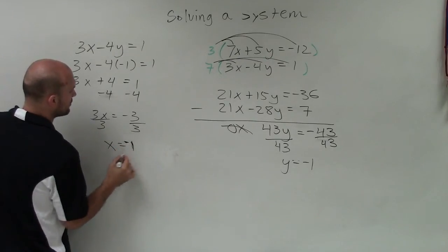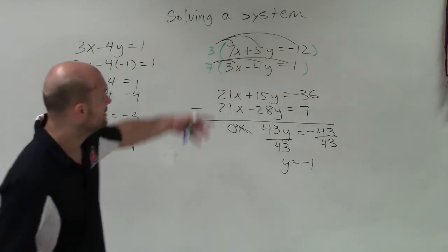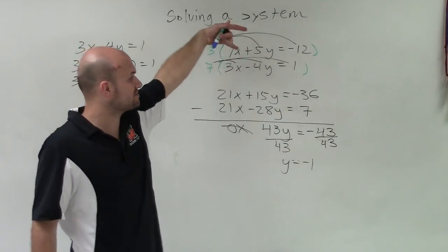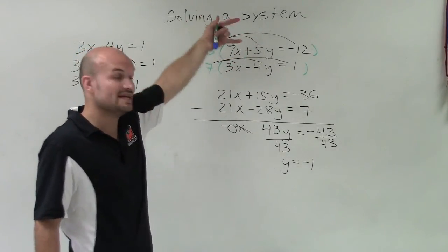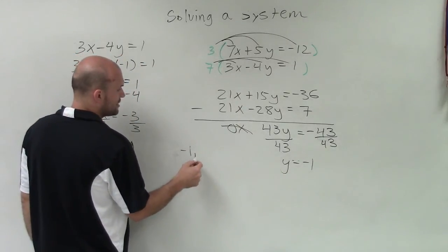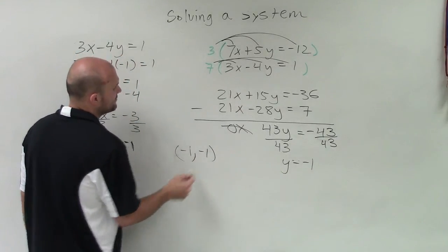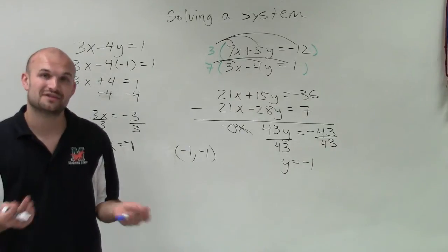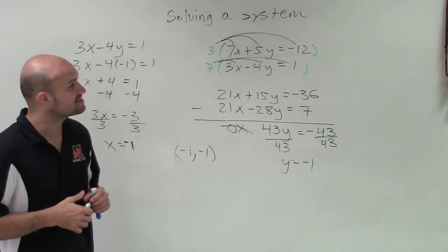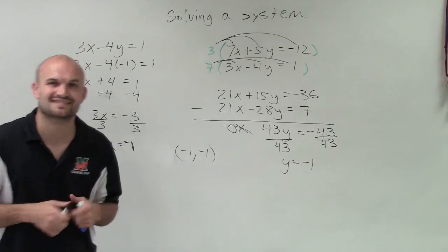Therefore, when x equals negative 1 and y equals negative 1, these two systems are equal to one another, meaning they create a coordinate point of intersection at negative 1 comma negative 1. That's how you solve a system of equations by multiplying by two multipliers. Thanks.